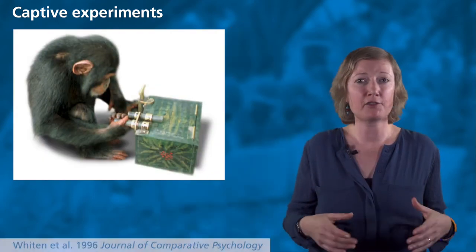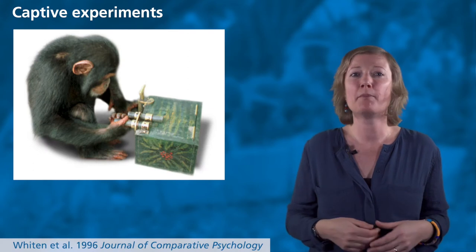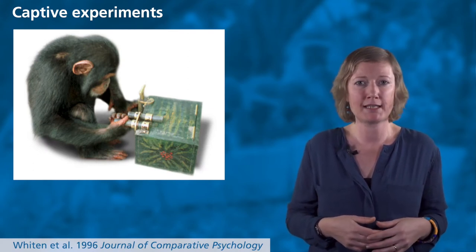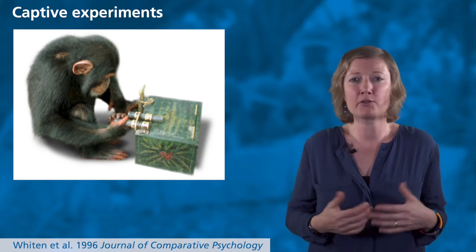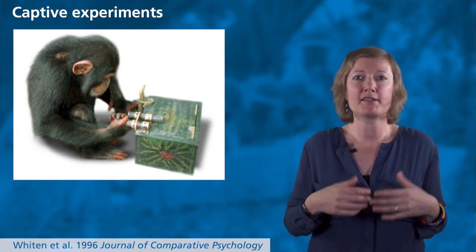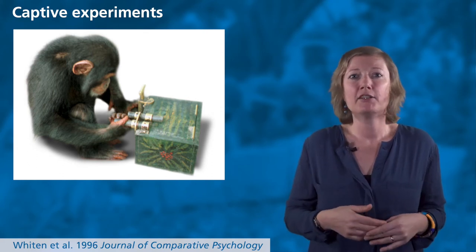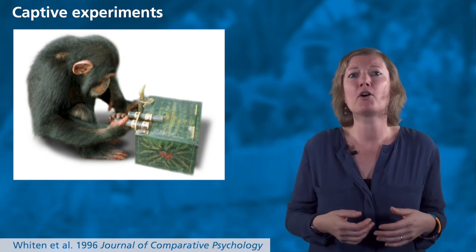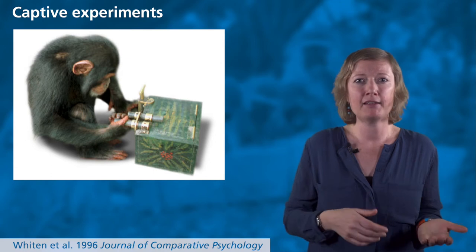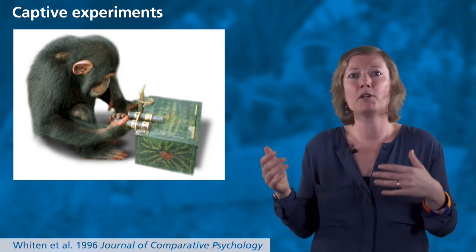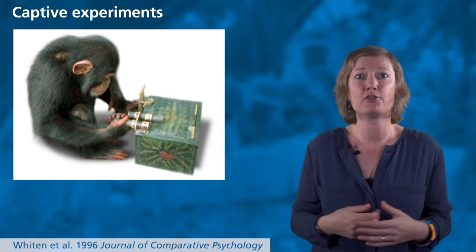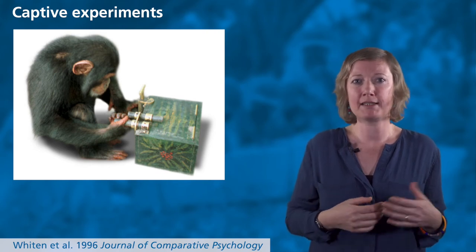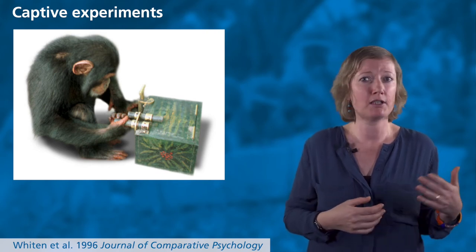He designed what is called an artificial fruit — a box that has multiple options to be opened in order to access the reward inside, replicating a complex fruit that requires extraction to be eaten. The typical experiment would involve one model trained to open the box using one option, and then that individual would open the box in front of others, and the researcher would test if participants copy the opening technique demonstrated or not.